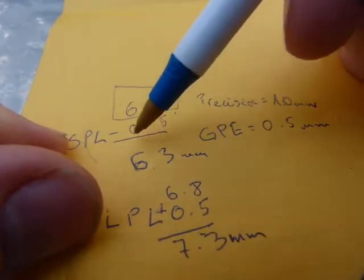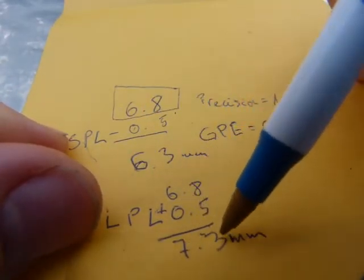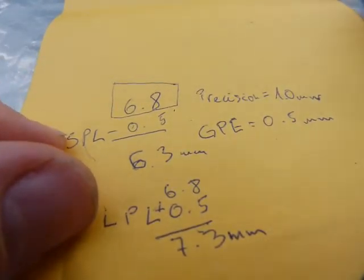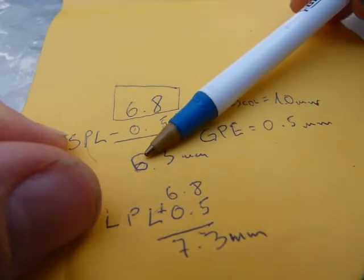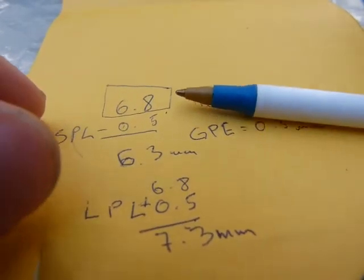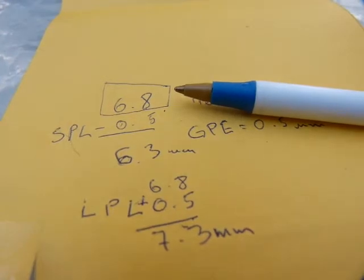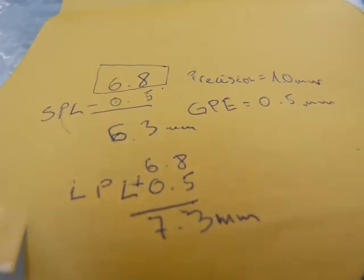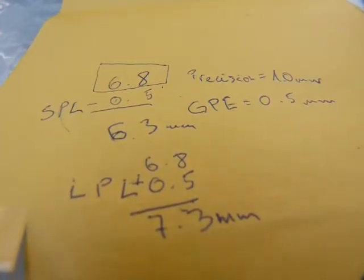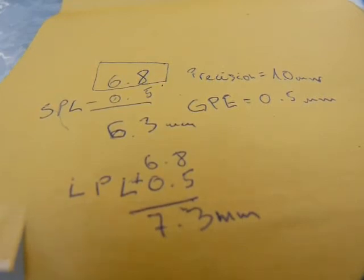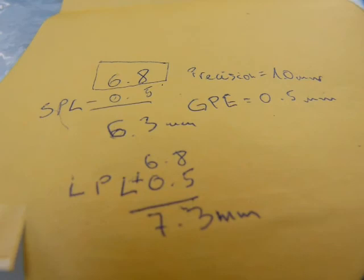Or you can say that its length is between 6.3 mm and 7.3 mm. That's the idea of greatest possible error. It's quantifying a degree of uncertainty in measurements when it comes to transmitting the information, the measurement, from one person to another.